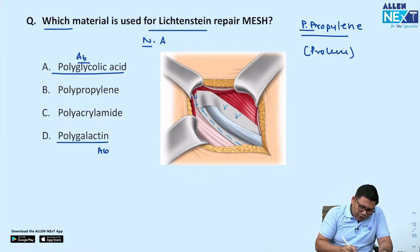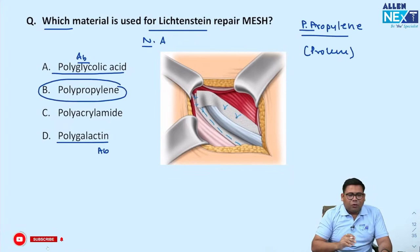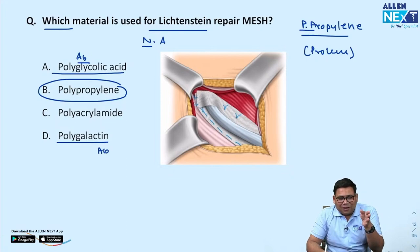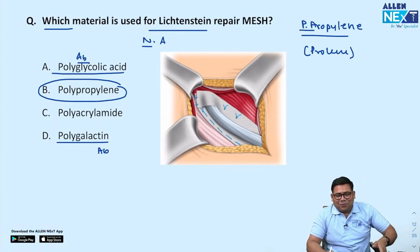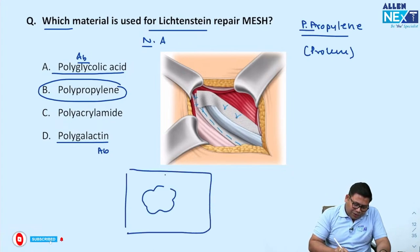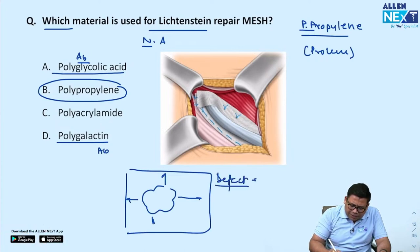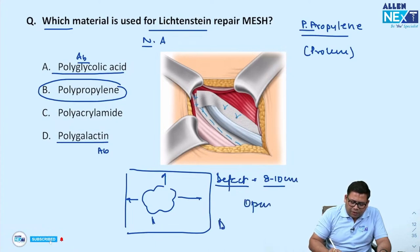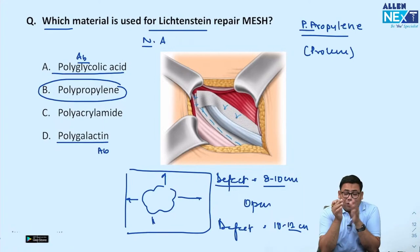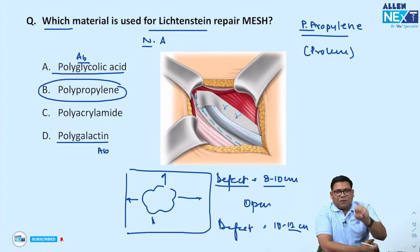The answer for the mesh question is polypropylene or Prolene mesh — this is ideal. The ideal size for any mesh is defect plus 8 to 10 cm for open hernia, and defect plus 10 to 12 cm for laparoscopic hernia, because at least 4 to 6 cm of area around the defect should be covered as fibrosis occurs during healing.